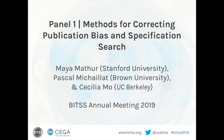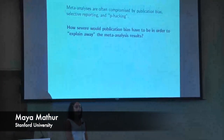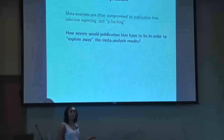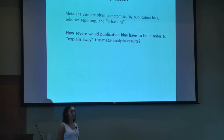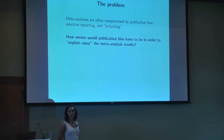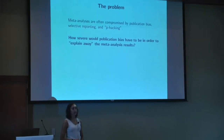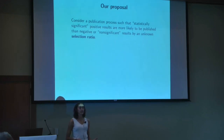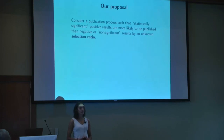I'm going to be talking today about some new statistical methods that try to address publication bias in meta-analyses. They do this specifically by answering a sensitivity analysis type of question: how severe would publication bias have to be to explain away the results of my meta-analysis? We're going to consider a publication bias process in which statistically significant and positive results are more likely to get published than non-significant or negative results by some unknown ratio.